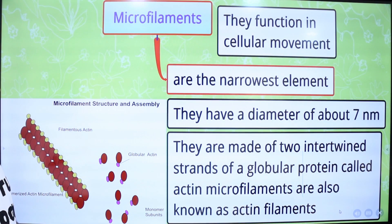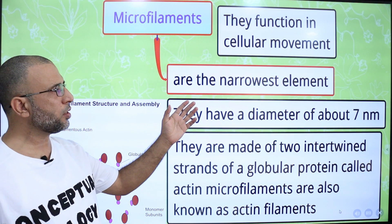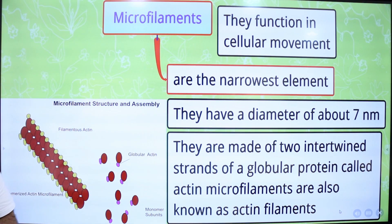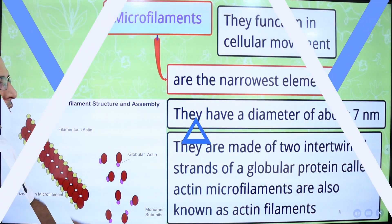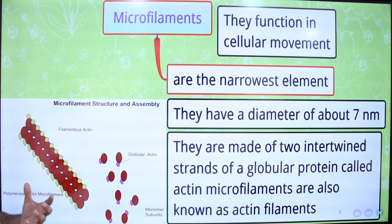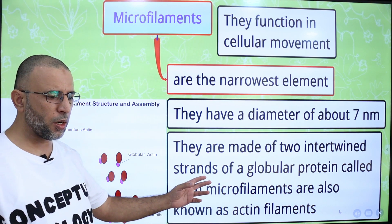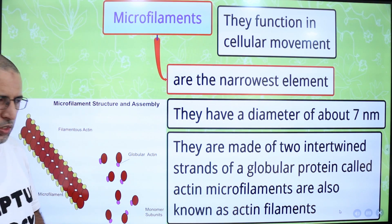First of all, we are going to talk about microfilaments. Microfilaments are the narrowest element and they function in cellular movement. They have a diameter of about 7 nanometers. They are made of two intertwined strands of globular protein called actin, and they are also known as actin filaments.